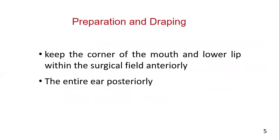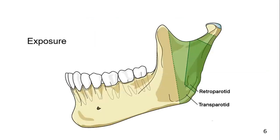The relevant landmarks should be exposed throughout the procedure, keeping the corner of the mouth and lower lip within the surgical field anteriorly and the entire ear posteriorly. These landmarks orient the surgeon to the course of the facial nerve and allow observation of lip motor function. Here you can see the exposure offered by the retromandibular approaches — the transparotid and retroparotid.